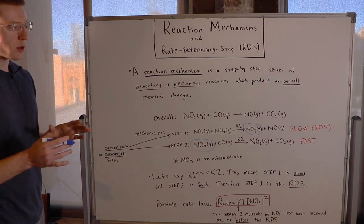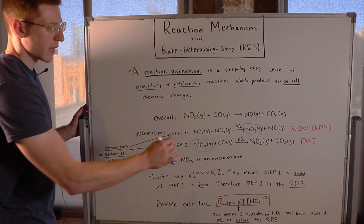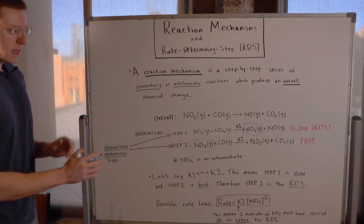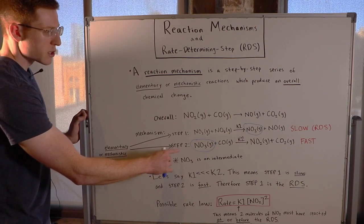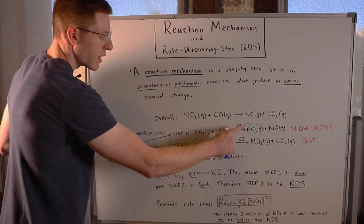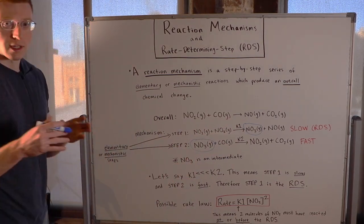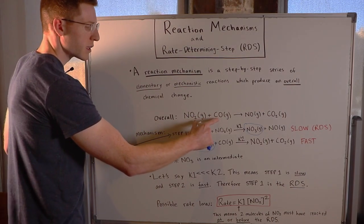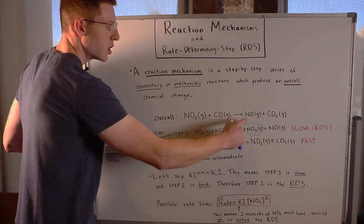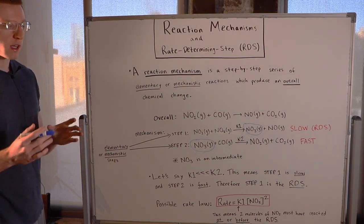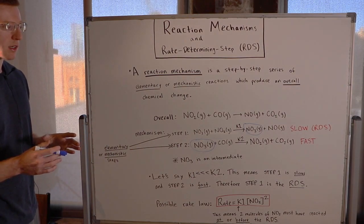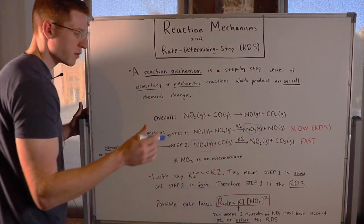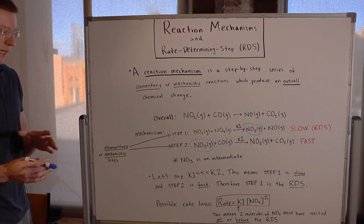I've circled in blue here NO₃ gas, because NO₃ is an intermediate. It is formed and then used up during the mechanism. You can see it doesn't appear in the reactants or the products of the overall chemical reaction. It's formed and then destroyed before we even finish, so we call it an intermediate.